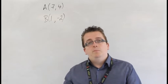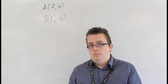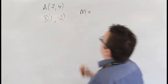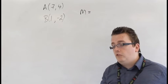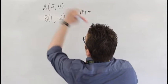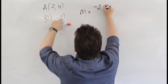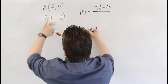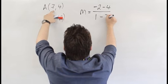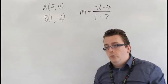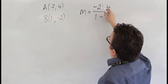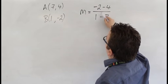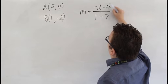So, first of all, you need to be able to find the gradient m. So, m, as we know, is the difference in the y-coordinates divided by the difference in the x-coordinates. So, what we can do is we can say minus 2, take away 4, divided by the difference in the x-coordinates, which is 1, take away 7. Now, make sure that when you're doing this, that the numbers line up, so that these are the coordinates of one of the points, and these are the coordinates of the other points.